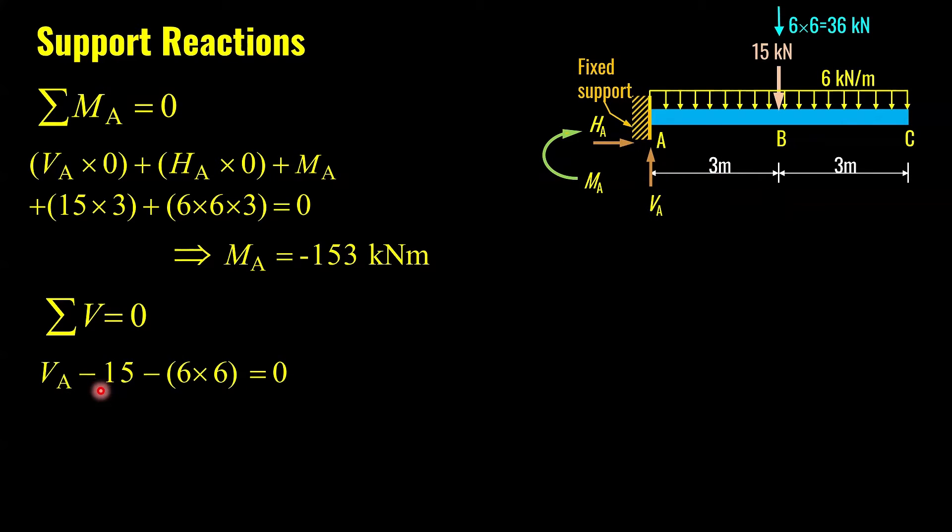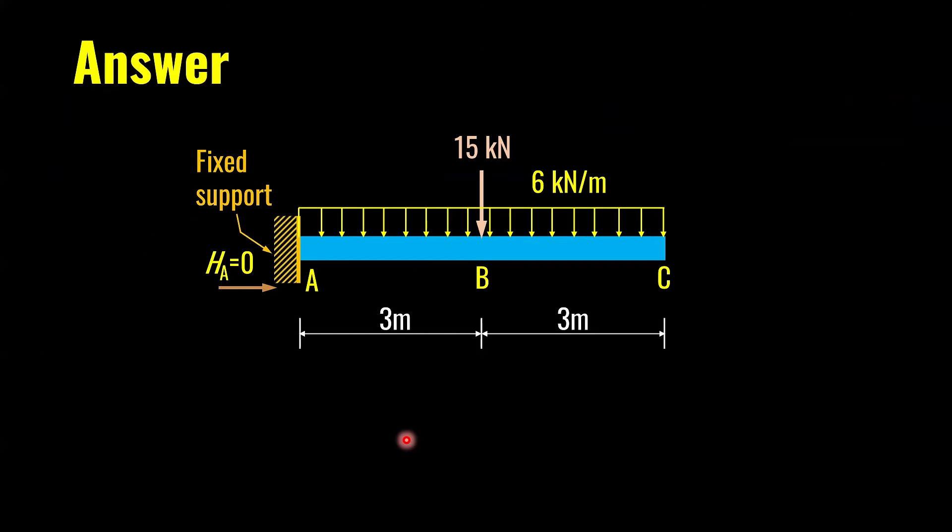Summation of vertical force is equal to zero. We have VA, only one vertical force, and we have this downward force 15 and total load 6 times 6. From here, we get value of VA as 51 kN. In this way, we have found out all the reactions. We got HA equal to zero, VA equal to 51 kN, and MA equal to minus 153 kN.